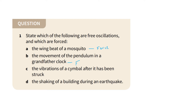Vibration of a cymbal after it has been struck - this is free oscillation. After you apply force, after a certain time it transitions into free oscillation at its natural frequency. The swaying of a building during an earthquake - this is forced oscillation, because the building is acted upon by the earthquake force.